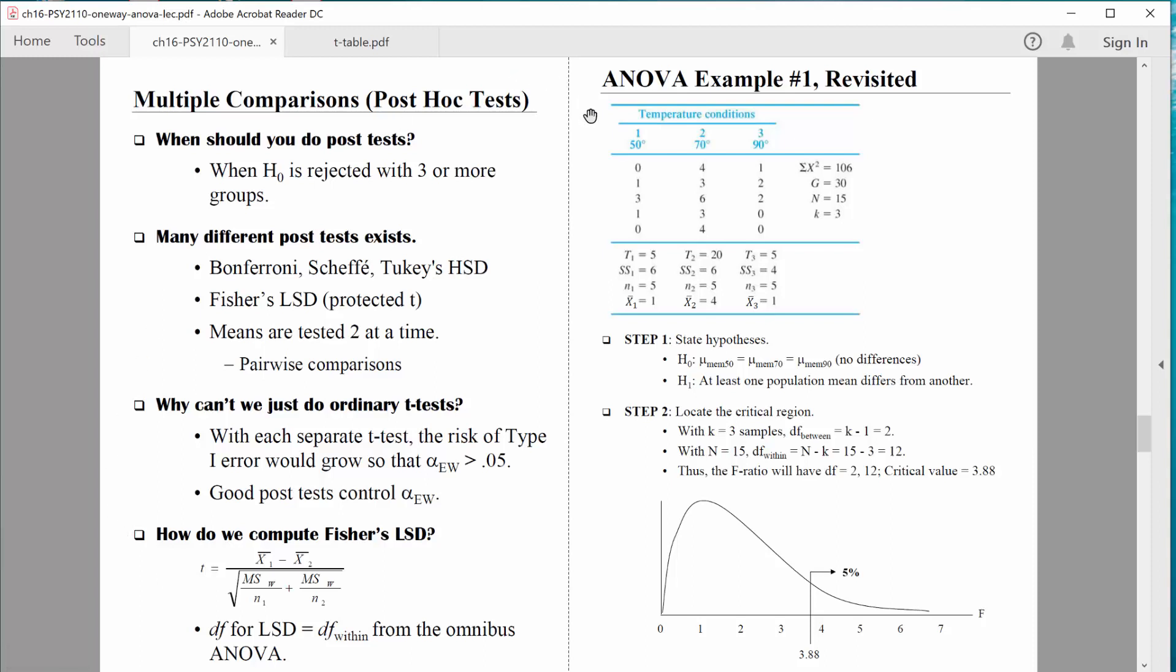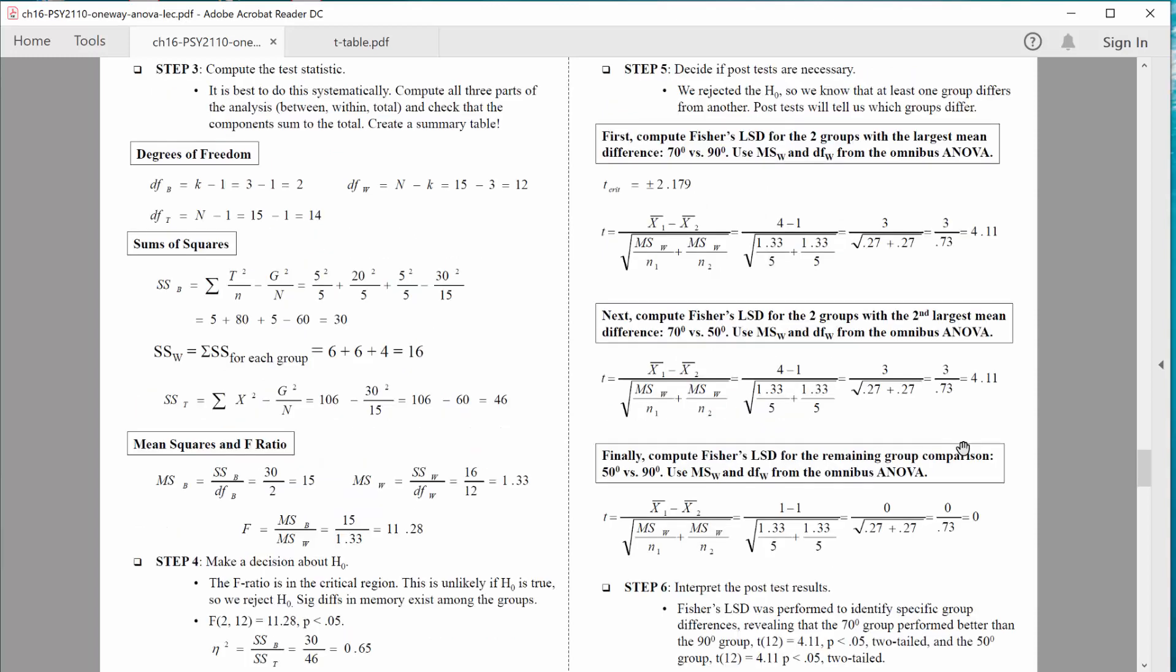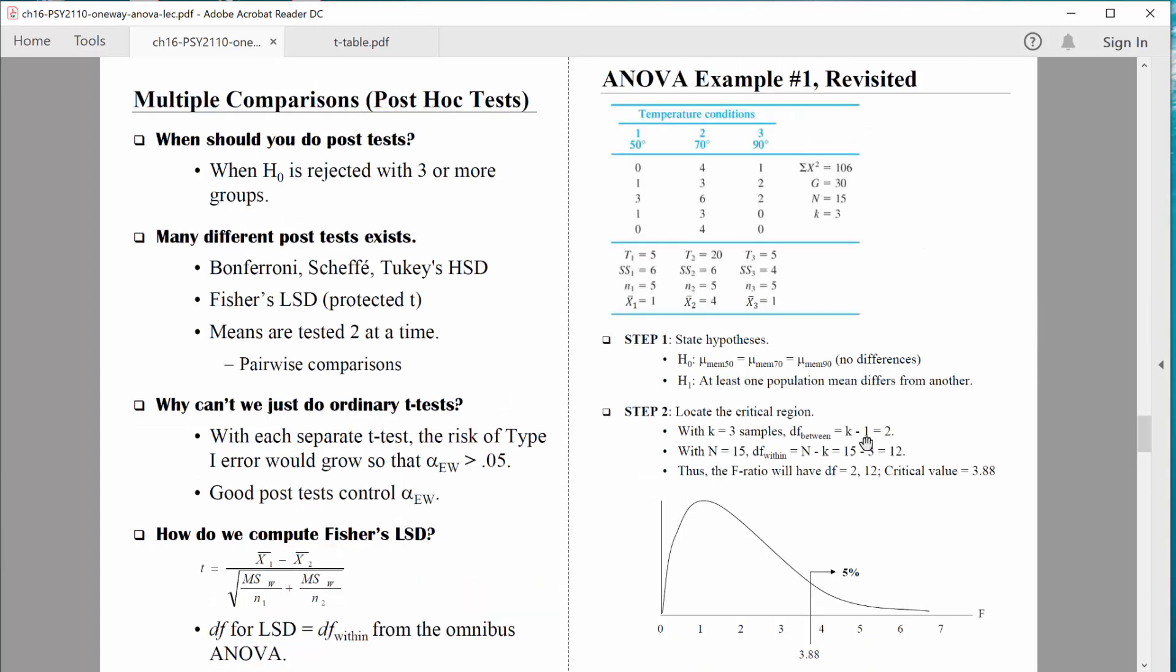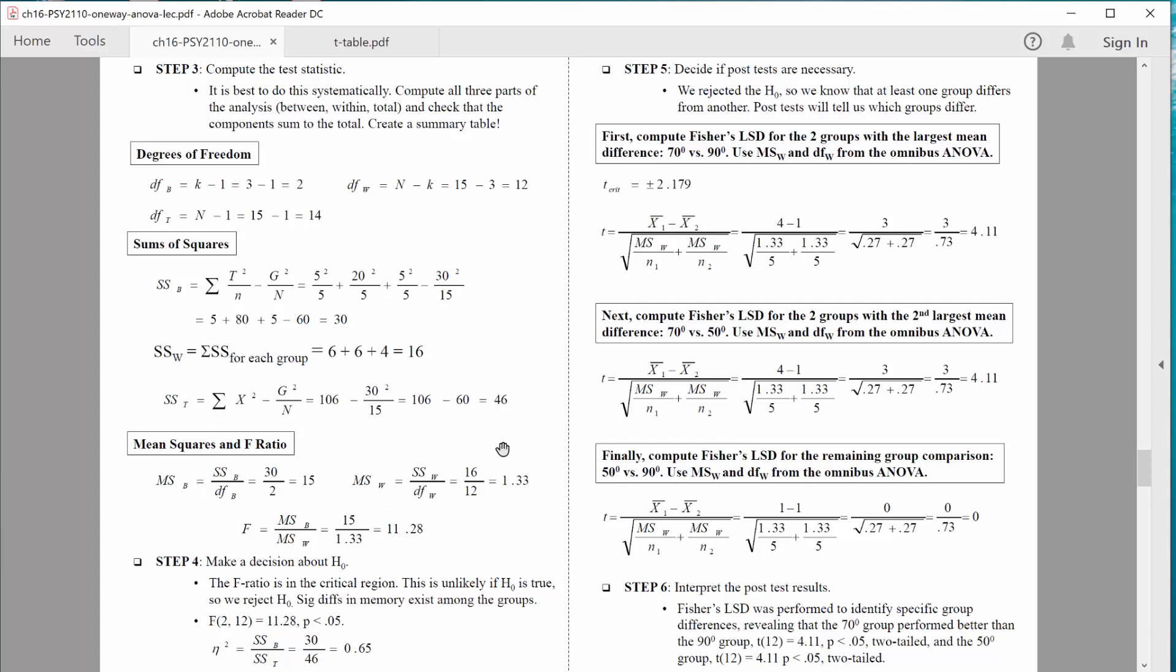Remember this first ANOVA example that we worked on. We set up our test. We figured out how much evidence we would need. We would need an F value above and beyond 3.88 to find statistically significant results. When we computed that F ratio, we found a very large value, 11.28. So that clearly exceeded our critical value, and we found statistically significant results. Because our results are statistically significant, it makes sense that we're going to do post-tests to figure out where the differences actually exist.